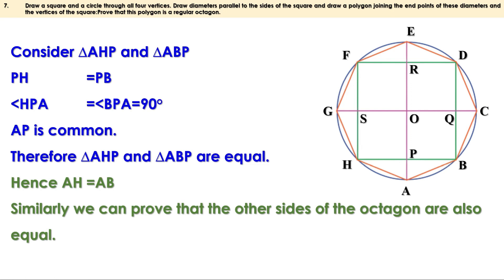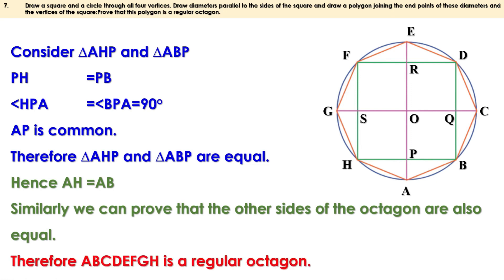When all the sides of an octagon are equal, we can say it is a regular octagon — ABCDEFGH is a regular octagon. Today we have discussed problems on page 68 and 69. In the next video, we shall discuss the next section on equal chords. Till then, bye.